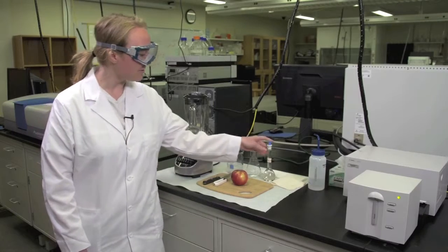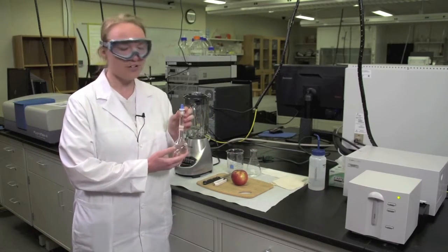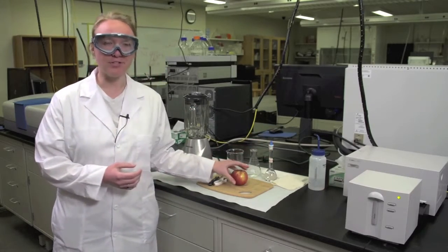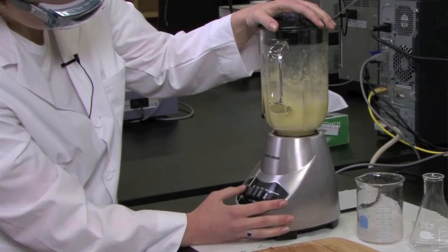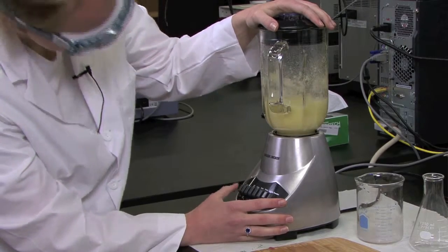Next, prepare your catechol solution, which is the substrate for this reaction, following the instructions in your lab manual. Then prepare the apple enzyme solution by peeling the apple, cutting it up, and putting it in the blender with 200 milliliters of ice and water. Blend until smooth.